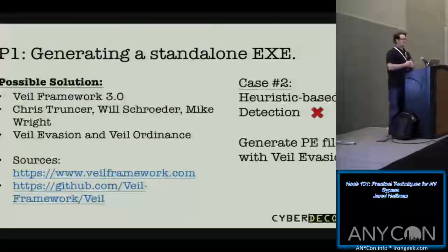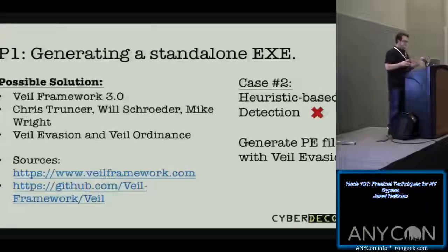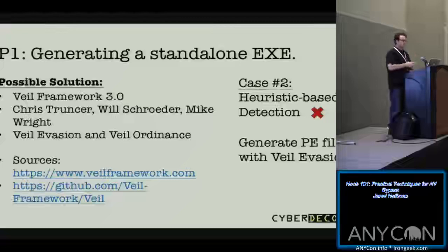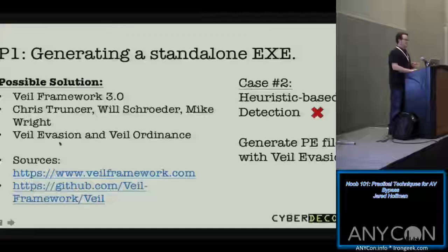That brought me to the Veil framework. The Veil Framework 3.0 is a Python framework that allows you to generate a variety of executable files that get around signature and heuristic AV detection. It has a lot of intelligence and different algorithms that generate unique EXEs each time. The two modules we look at are Veil Evasion — which builds the executable — and Veil Ordnance, which generates shellcode.